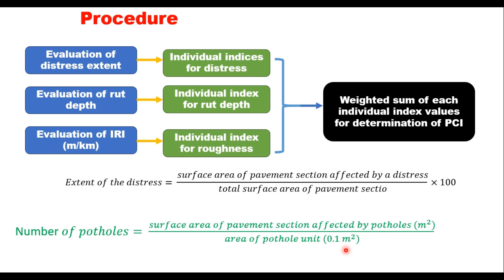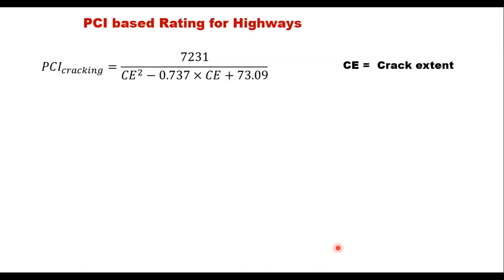For example, if the total area of potholes in the selected road length is 0.5 square meters, the equivalent number of potholes would be 0.5 divided by 0.1, which equals 5 potholes for PCI calculations. Once you know the extent of distress and number of potholes, you can calculate PCI for each individual distress type.